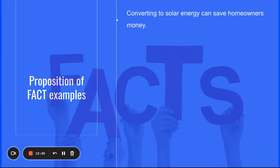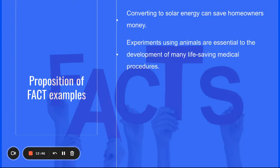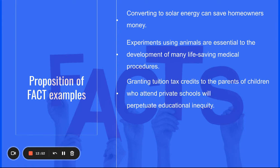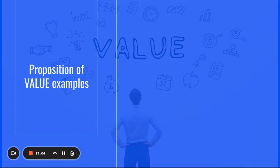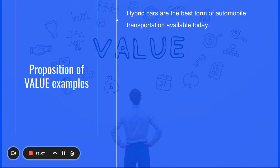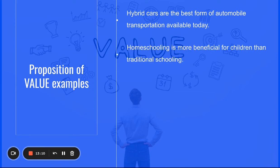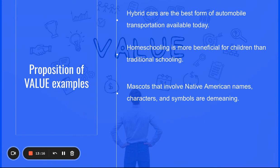Proposition of fact examples include: converting solar energy can save homeowners money; animal experiments are essential to the development of many life-saving medical procedures; granting tuition tax credits to parents of private school children will perpetuate educational inequity; and climate change has been caused by human activity. Proposition of value examples include: hybrid cars are the best form of automobile transportation available today; homeschooling is more beneficial for children than traditional schooling; Native American mascots are demeaning; and a vegan diet is the healthiest for adults.